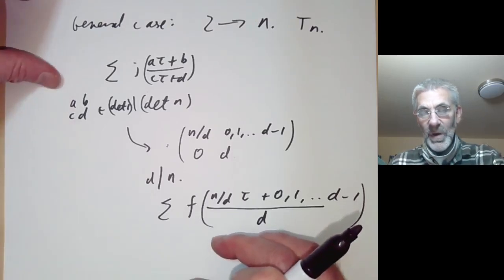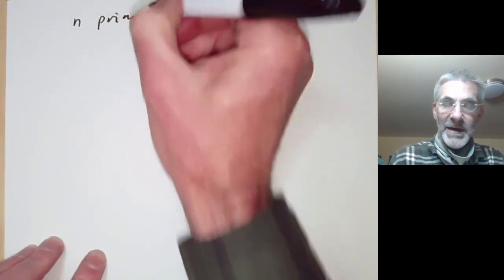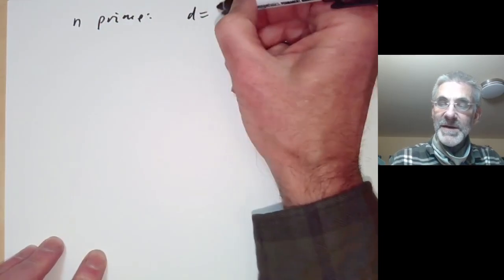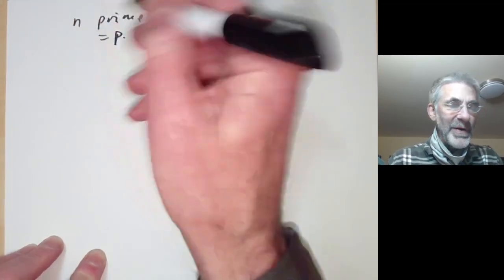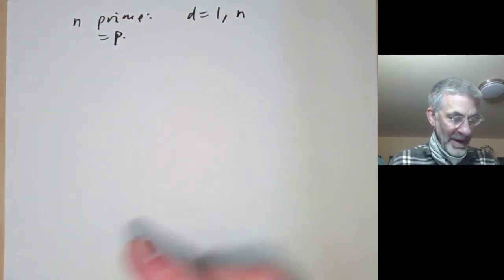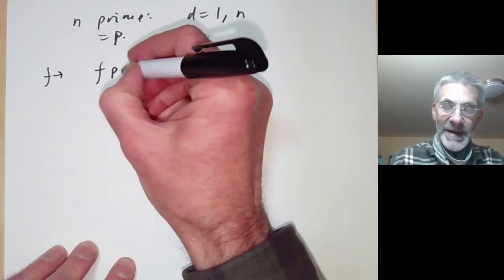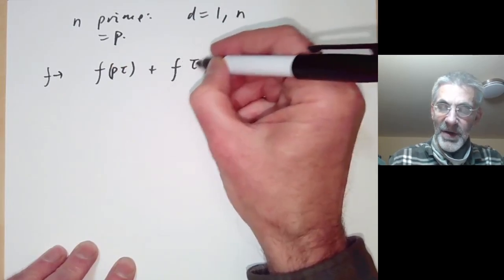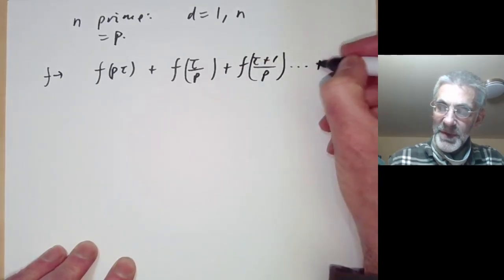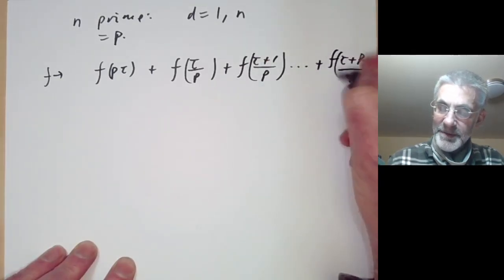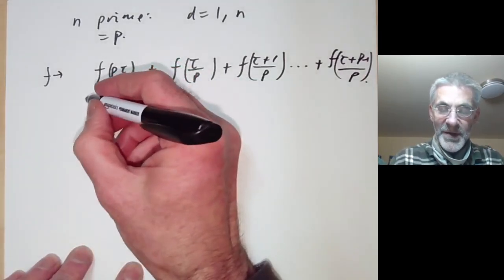For the case n = prime p, the only divisors are 1 and p, and the Hecke operator Tₚ takes f to f(pτ) + f(τ/p) + f((τ+1)/p) + ... + f((τ + p−1)/p).